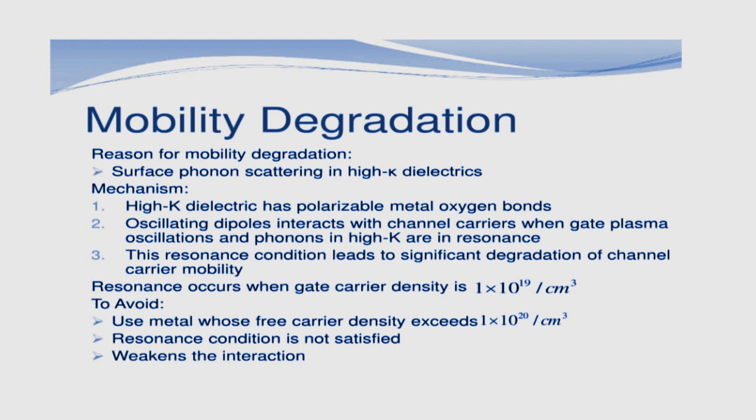Resonance occurs when gate carrier density is 1×10^19 per cm³. To avoid this, use metal whose free carrier density exceeds 1×10^20 per cm³. The resonance condition is not satisfied, weakening the interaction.